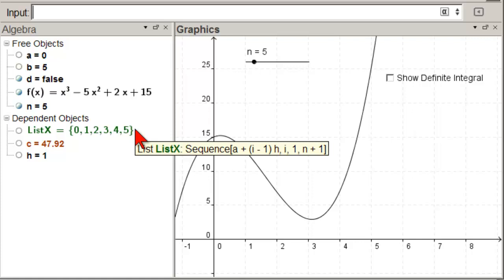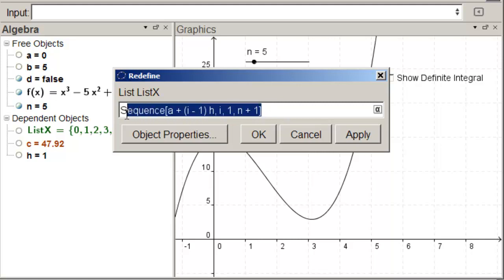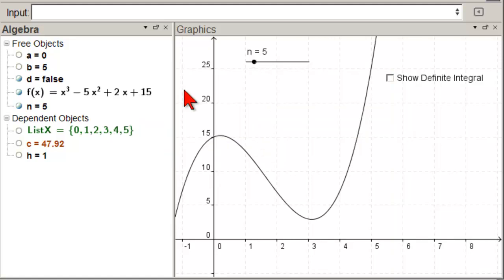Now we need to basically do the same thing, but with Y. So let's look at this for a minute. Let's copy it. Let's make our list of Ys. List Y equals, and we'll paste that, what we have there. And now instead of just A plus this, we need the function at that value. So we're going to put an F in front of it, and a parenthesis, and a parenthesis, and that should give us the function values at those points. And sure enough, it does. The function value at 0 is 15. At 1, it's 13. Let's see here. At 3, it's about 2 or 3. There it is. It's 3. So that's good.